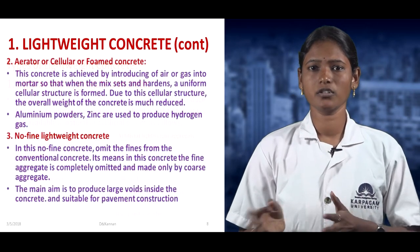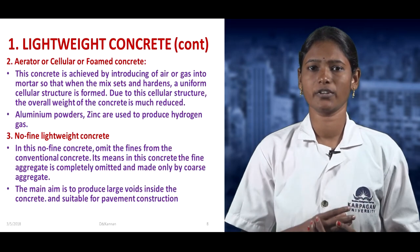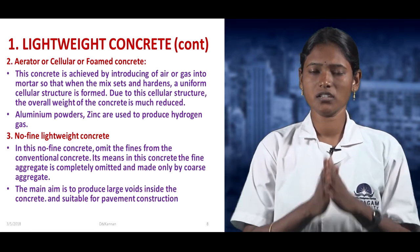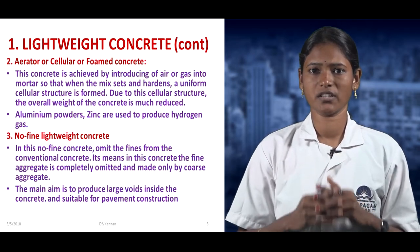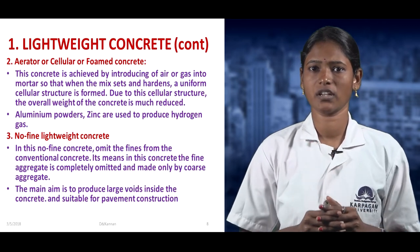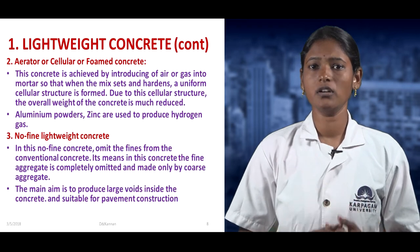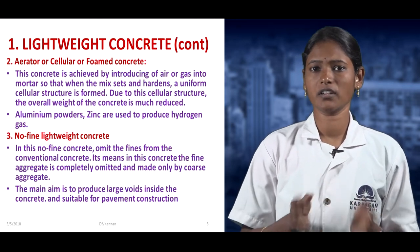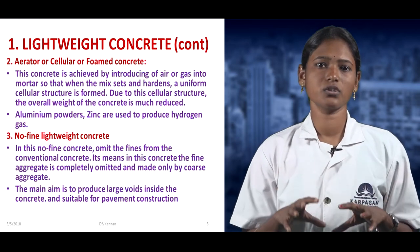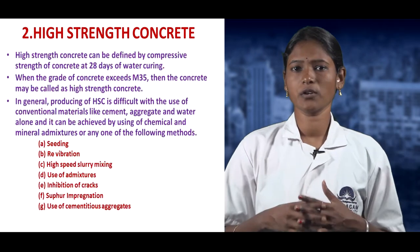In aerated or cellular concrete, air is induced inside the concrete, creating a cellular structure. This air is produced using hydrogen gas, and aluminum powder and zinc are used to generate the hydrogen gas. In no-fines concrete, fine aggregate is avoided and only coarse aggregate is used. This coarse aggregate is used to provide pavement blocks.